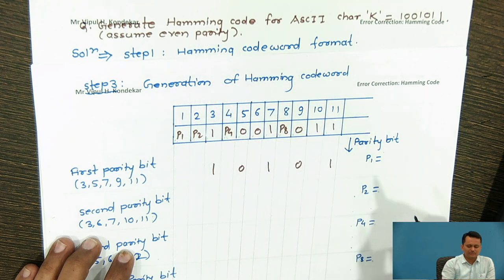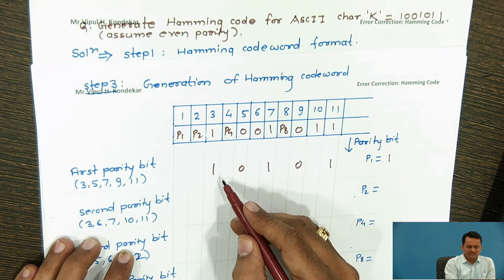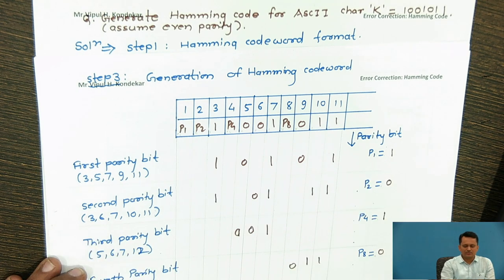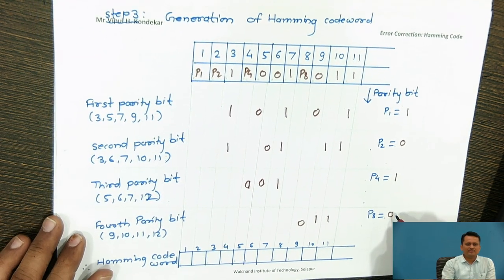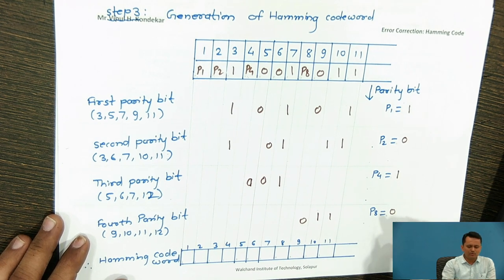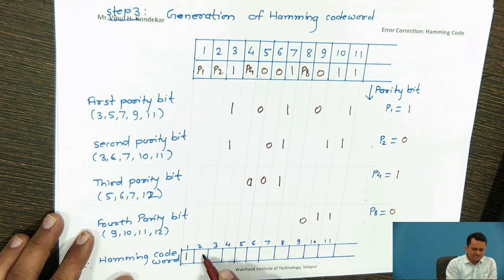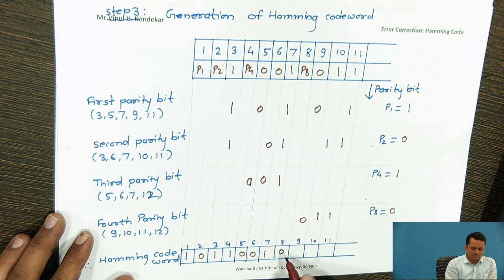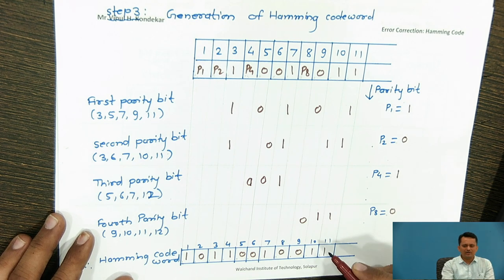Assuming even parity, P1 is set to 1 to make the parity even. Continuing similarly, P8 will be 0. Once P1, P2, P4, and P8 are determined, the full Hamming code word for ASCII character 'K' becomes: P1=1, P2=0, bit3=1, P4=1, bit5=0, bit6=0, bit7=1, P8=0, bit9=0, bit10=1, bit11=1 — giving the complete Hamming code word.